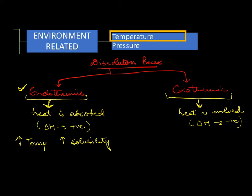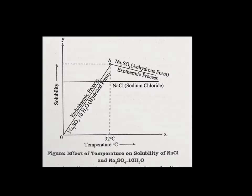On the other side, for an exothermic reaction where heat is evolved when the solute comes in contact with the solvent, with increase in temperature we will find a decrease in drug solubility. So if I plot a graph between solubility and temperature, this graph or plot will be called the solubility curve.